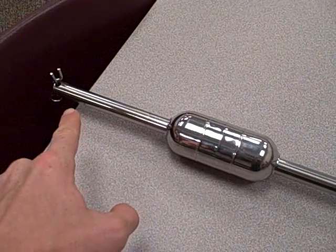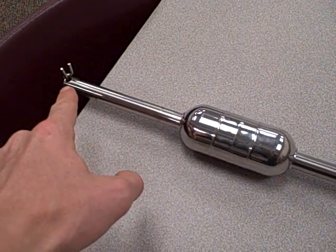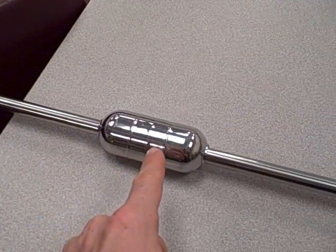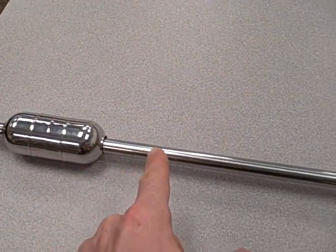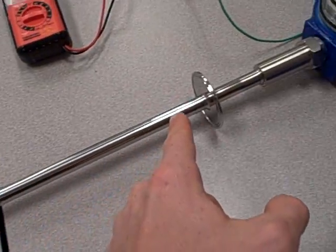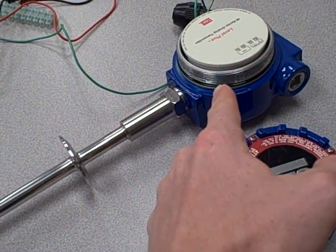At this end, there's a dampener that dampens out that torsional vibration so it doesn't reflect back. But there is no such dampener over here. It just travels along the rod, and that torsional vibration is detected by the electronic package.